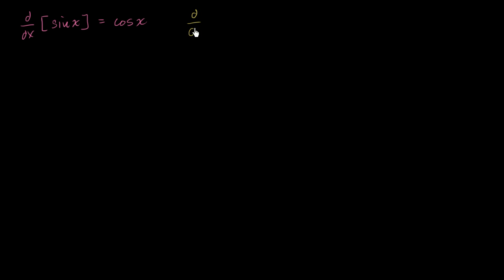Now, what about the derivative of cosine of x? What about the derivative with respect to x of cosine of x? Well, this is going to be negative sine of x. So derivative of sine is cosine, derivative of cosine is negative sine.